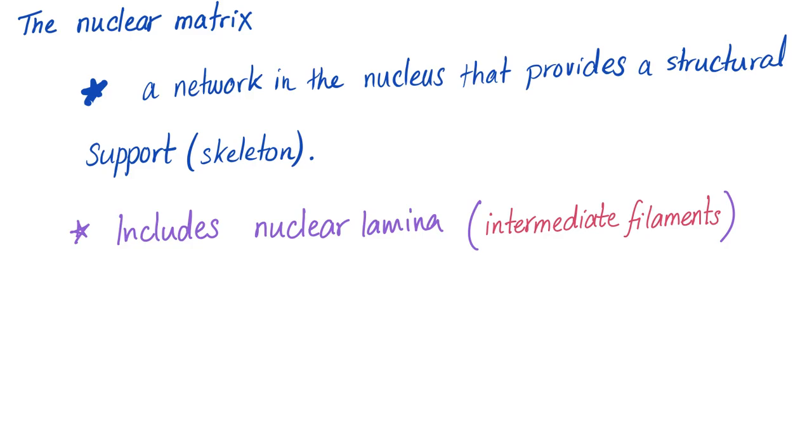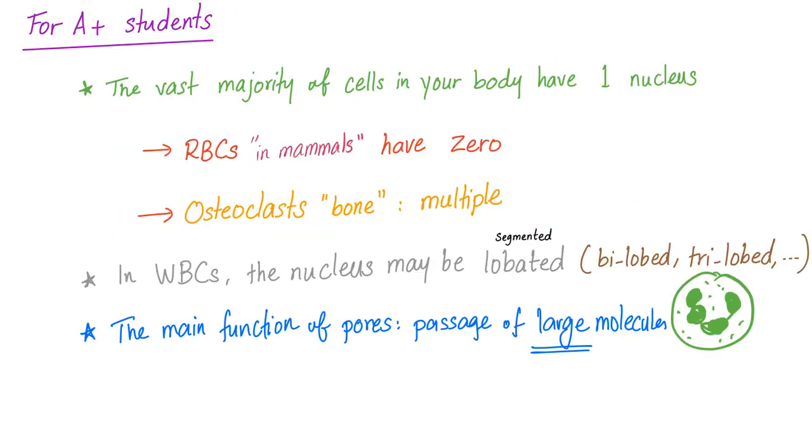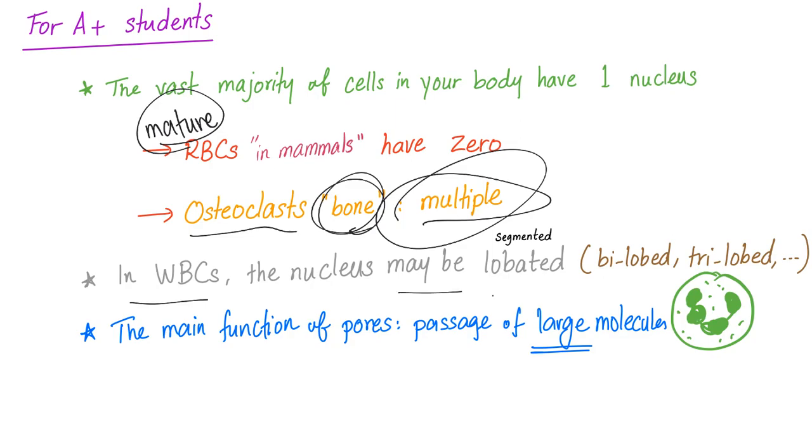The vast majority of cells in your body have one nucleus. However, there are exceptions. Red blood cells, for example, have zero. Not any red blood cell, the mature red blood cell. Very nice. Osteoclasts, or one of the bone cells, they have multiple nuclei. In white blood cells, the nucleus may be segmented or lobated, called the bi-lobed, tri-lobed, whatever. This is a segmented neutrophil.